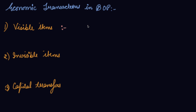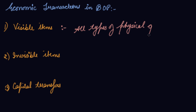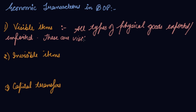Sometimes you export goods to foreign countries and you receive money for that. Visible items include all types of physical goods that can be seen — physical goods exported or imported. These are made of some material and can be seen while crossing the border. Any tangible thing that can be seen and touched — a physical good that you are exporting or importing — is a visible item.